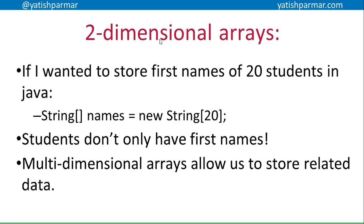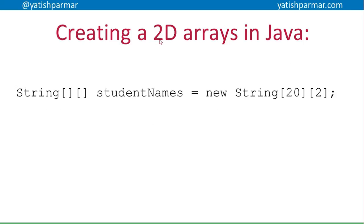If I had a 2D array and I wanted to store the first name of 20 students, I could declare it as `String names = new String[20]`. But students don't only have first names — that applies to many different groups of data where you want to store multiple related items together. Maybe I want to store last names, gender, address, or whatever the requirement is. So we might want to use a two-dimensional array.